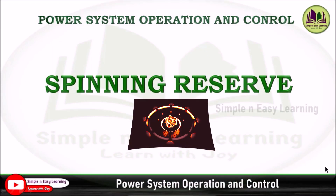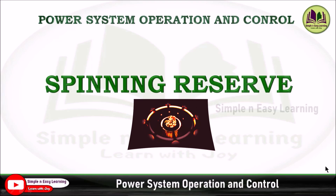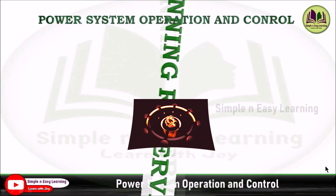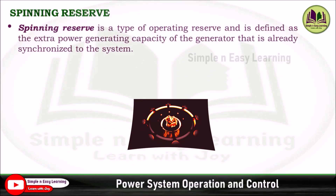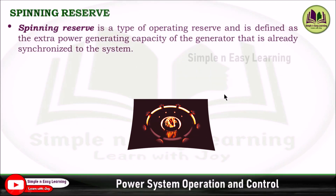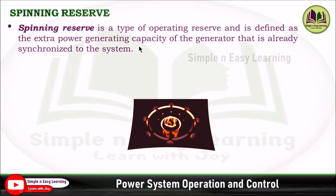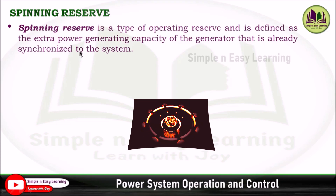Today, we are going to see a very important concept in power system operation and control — that is spinning reserve. Spinning reserve is a type of operating reserve and is defined as the extra power generating capacity of the generator that is already synchronized to the system.